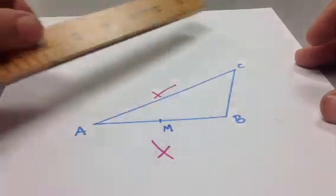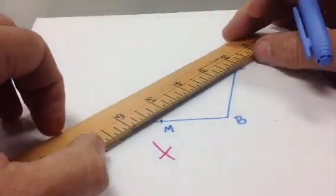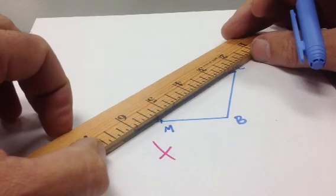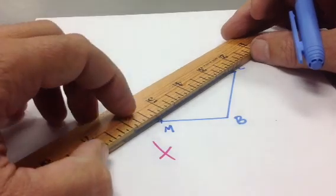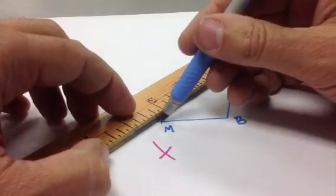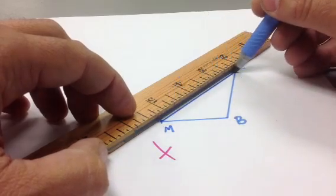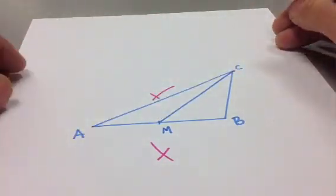So now, all we have to do is connect the segment from C to M, and we have constructed one of the three medians of triangle ABC.